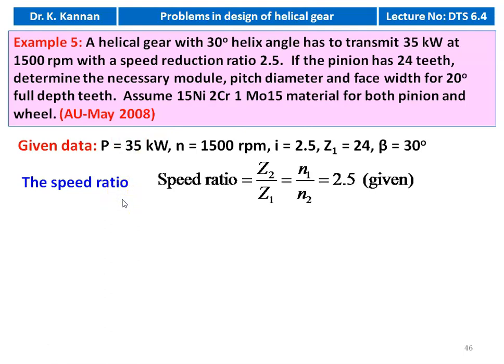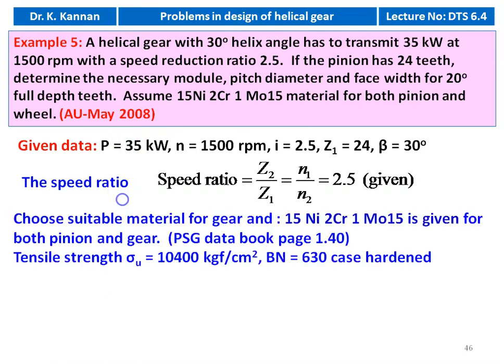The material for the gear and the pinion is 15Ni2Cr1Mo15 for both. From the PSG data book page number 1.40, tensile strength sigma_u = 10,400 kilogram force per centimeter square, BHN (Brinell hardness number) = 630, case hardened.